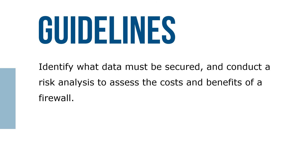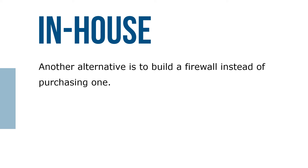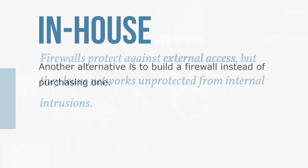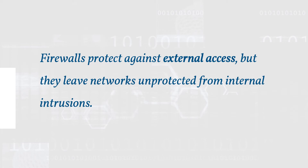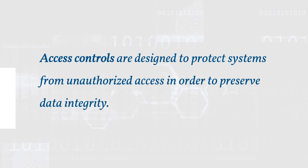Guidelines for improving a firewall's capabilities include: identify what data must be secured and conduct a risk analysis; compare a firewall's features with the organization's security needs; compare the features of packet filtering firewalls, application filtering firewalls, and proxy servers to determine which addresses your network security needs; examine the cost of firewalls and remember the most expensive is not necessarily the best. Another alternative is to build a firewall in-house instead of purchasing one. Note that firewalls protect against external access but leave networks unprotected from internal intrusions.